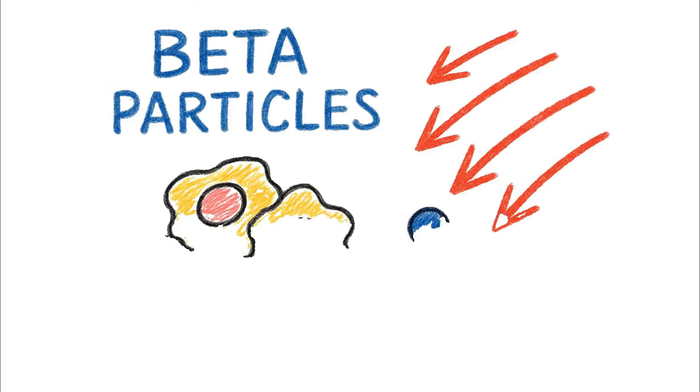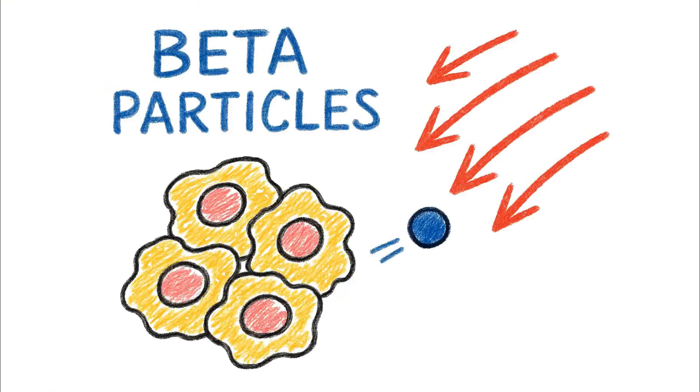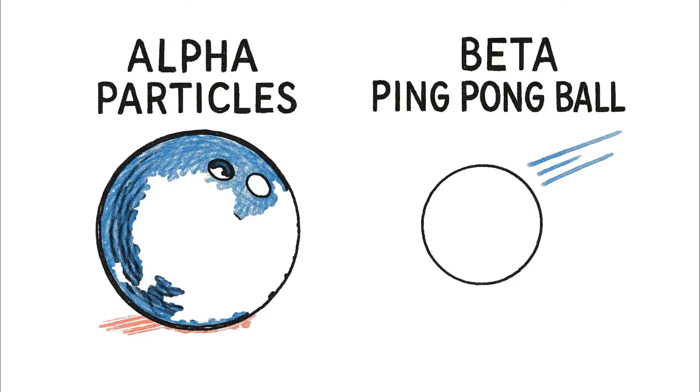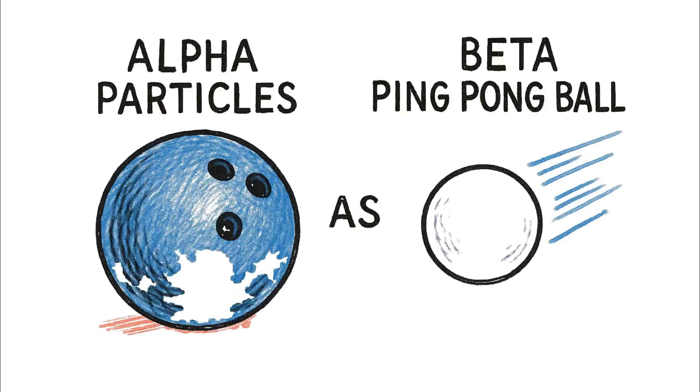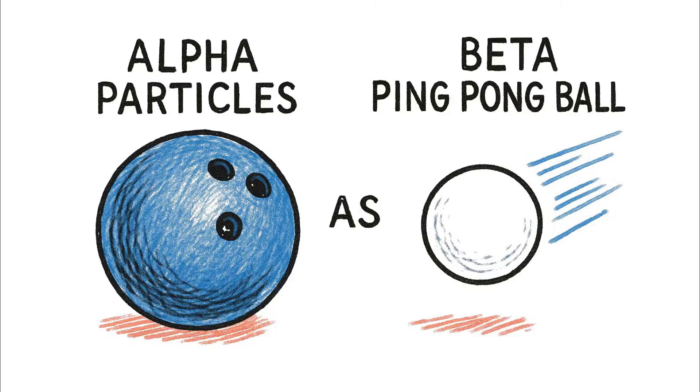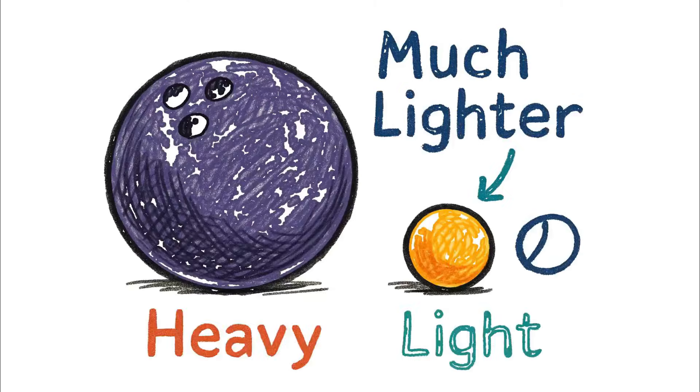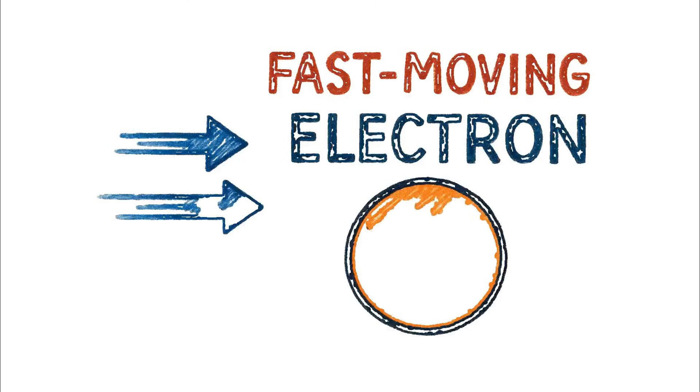Next up is the second type, beta particles. If alpha particles are bowling balls, then think of beta particles as high-speed ping-pong balls. They are much lighter. They're essentially just fast-moving electrons.